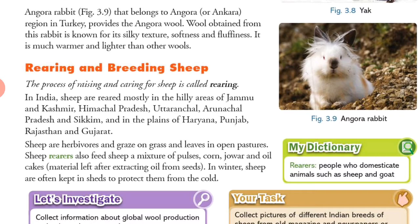Sheep rearers also feed sheep a mixture of pulses, corn, jowar and oil cake — material left after extracting oil from the seeds. In winter, sheep are often kept in sheds to protect them from the cold.